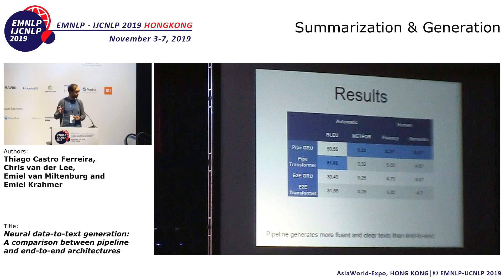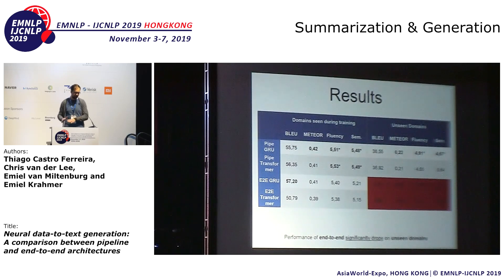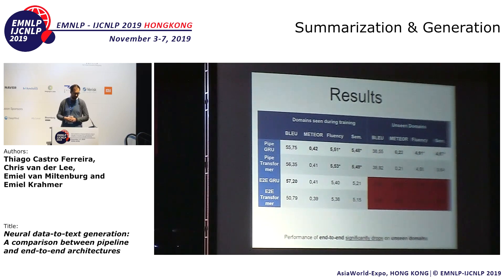We wanted to find out where end-to-end is struggling, so we looked at domains that were seen in the training set versus unseen domains. That's where a lot of the trouble for end-to-end comes from. The pipeline architectures generalize quite well — for instance, the BLEU score for the pipeline GRU was 55.75 and dropped only to 38.55 on unseen domains. But the end-to-end system had the highest score for seen domains at 57.20, then dropped all the way down to 6.25 — a huge drop. A similar pattern appears for fluency scores: a 5.40 drops to 3.45 for the end-to-end GRU, while the pipeline GRU stays relatively similar, dropping from 5.51 to 4.91.